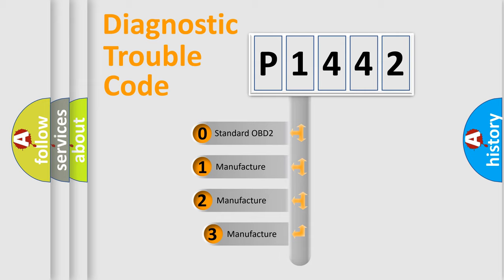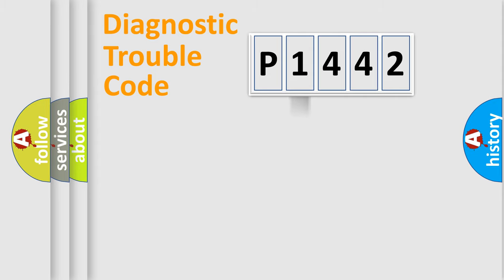If the second character is expressed as zero, it is a standardized error. In the case of numbers 1, 2, 3, it is a more prestigious expression of the car-specific error.